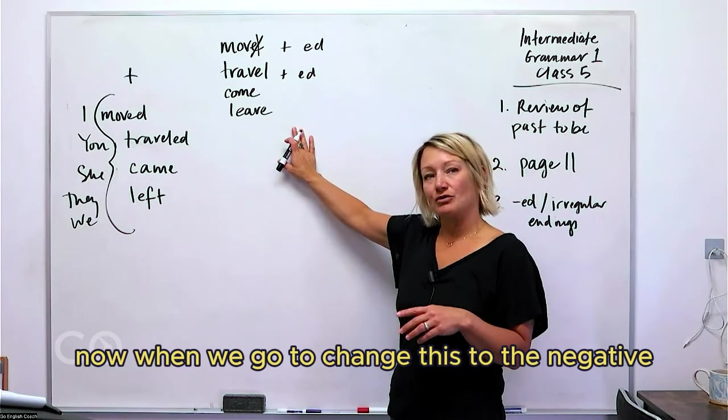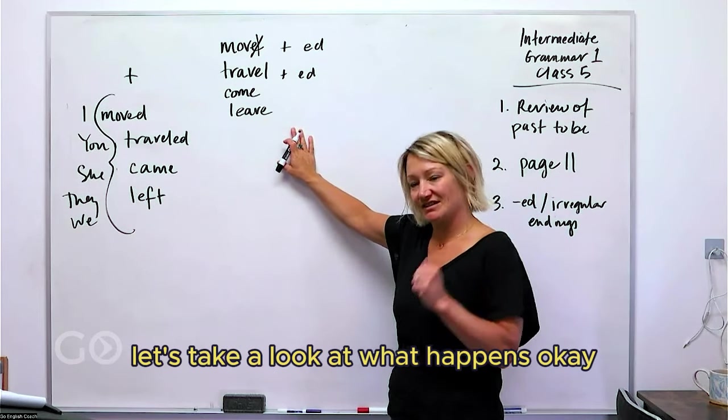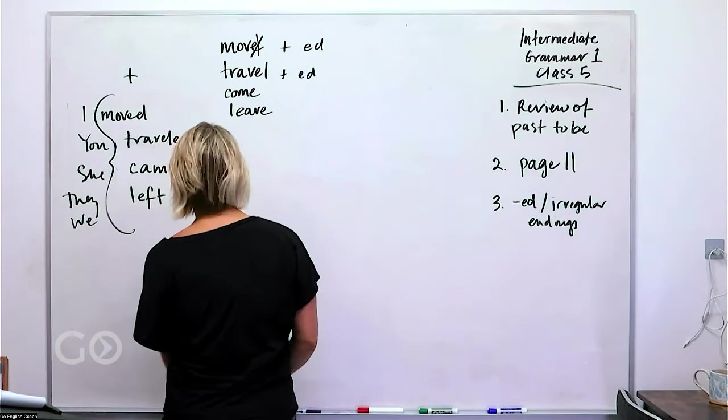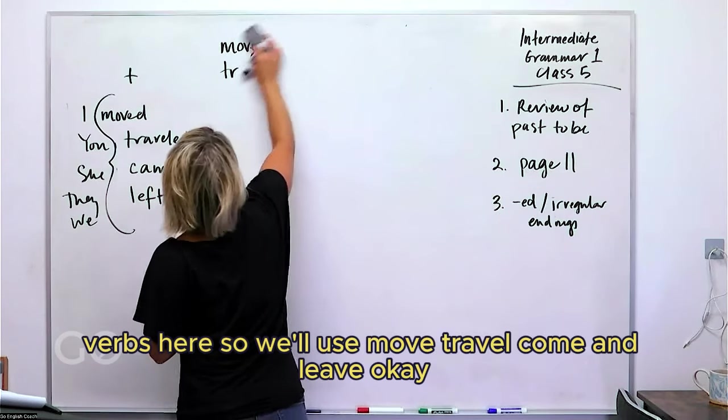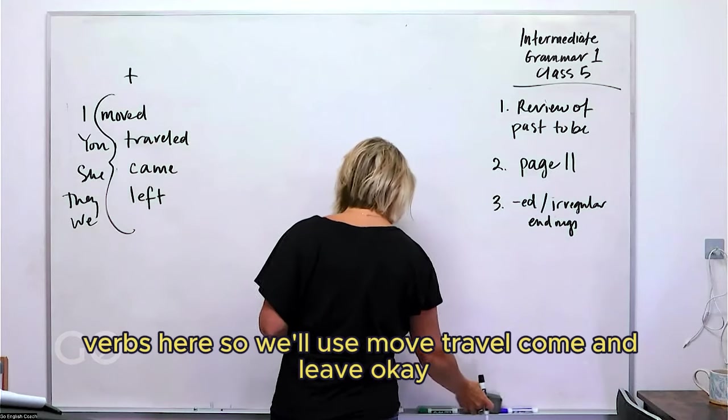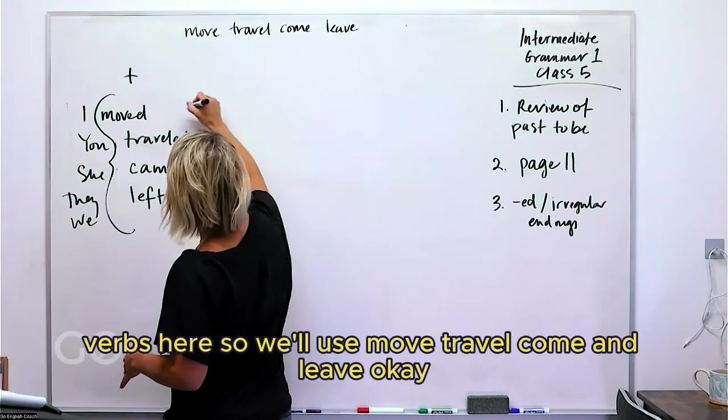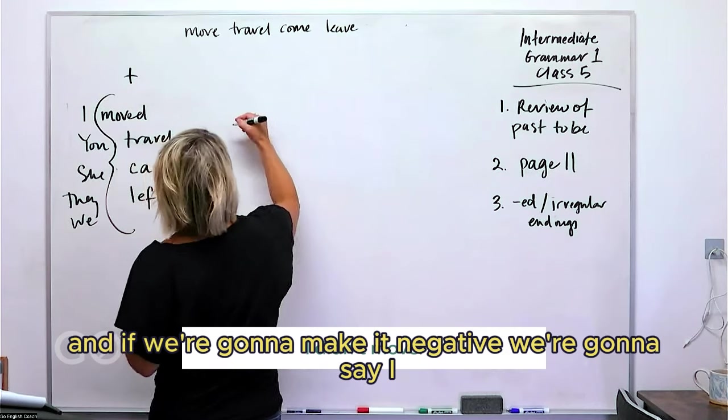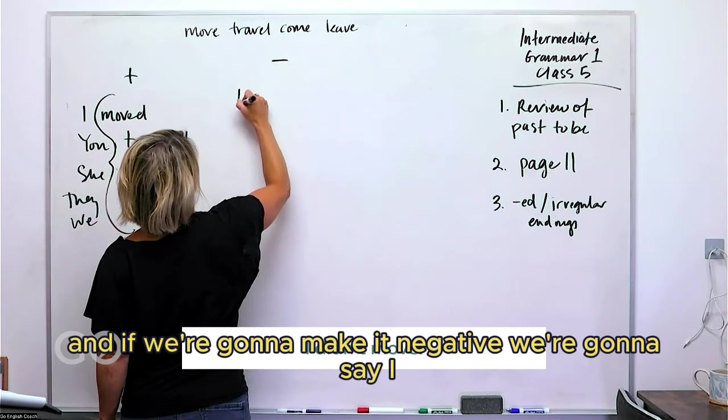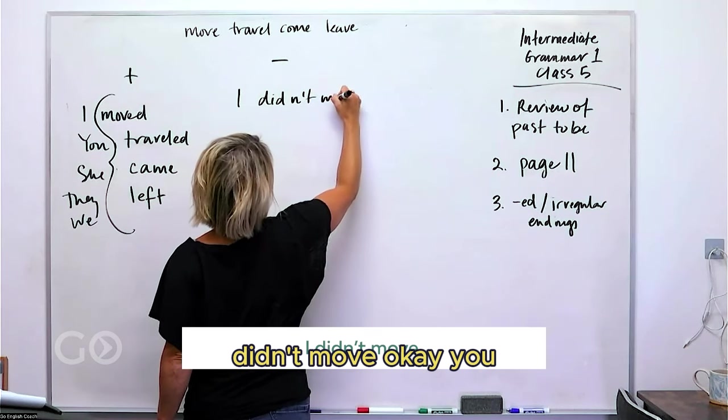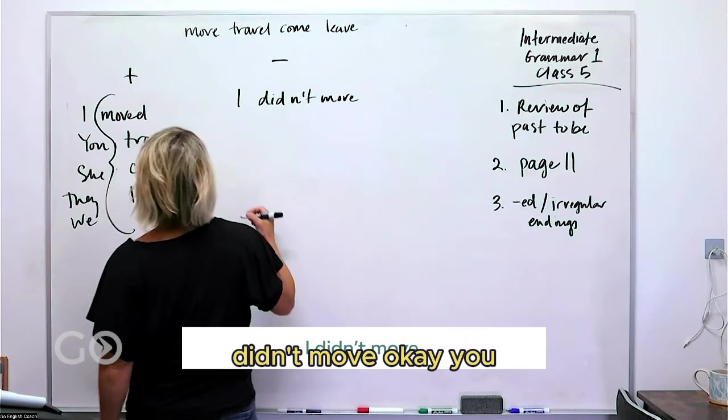Okay, so that's our simple affirmative. Now when we go to change this to the negative, let's take a look at what happens. Let's stay using these verbs here. So we'll use move, travel, come, and leave. Let's change those to negative.